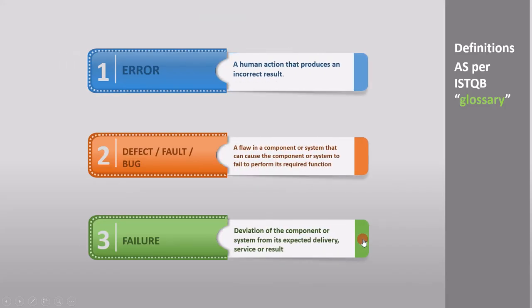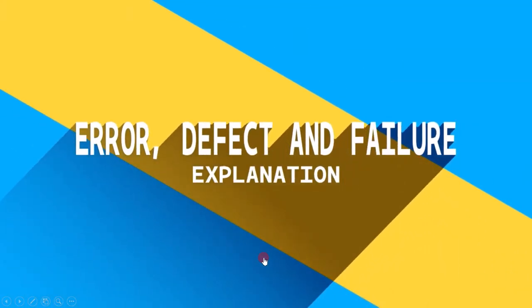Since these three definitions are important, let's repeat them. An error is defined as a human action that produces an incorrect result. The definition for defect is a flaw in a component or system that can cause the component or system to fail performing its required function. Failure is defined as a deviation of the component or system from its expected delivery, service, or result. Now we will see the detailed explanation of error, defect, and failure concepts so that you understand their differences.